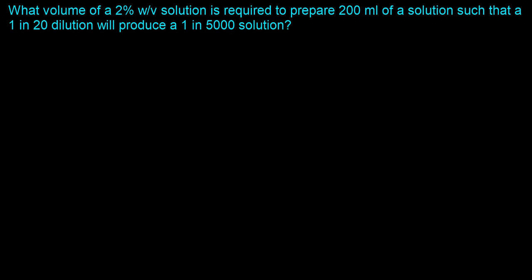If you can try and imagine it, what you actually have is some volume which is 200 milliliters. The volume is 200 milliliters, and you prepared this 200 milliliters using a two percent weight by volume solution — so the concentration is two percent weight by volume. The real question is: what exactly is the volume of your total mixture?